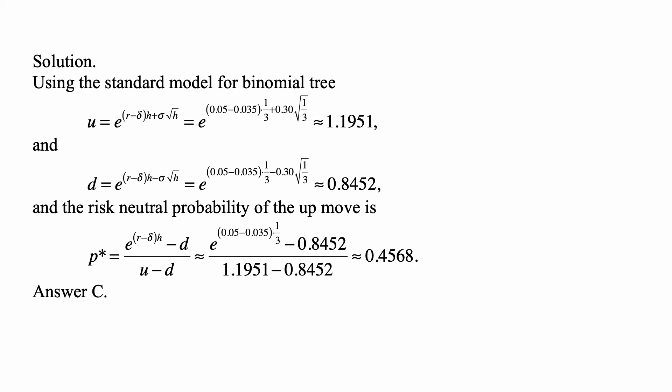The risk-neutral probability of the up move is p* = (e^((r − δ)h) − d) / (u − d). That equals (e^((0.05 − 0.035)(1/3)) − 0.8452) / (1.1951 − 0.8452), which is approximately 0.4568 — answer choice C.